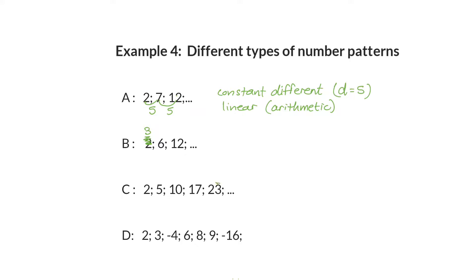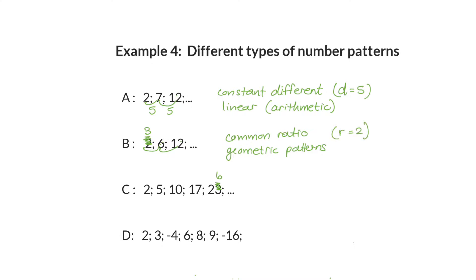The constant difference is five in this case. The second type has no constant difference — the difference is six here and three there — but it has a common ratio: it has been multiplied by the same number. Three times two is six, six times two is twelve. Or: twelve divided by six is two, and six divided by three is also two. Patterns with a common ratio are called geometric patterns, and you will be doing them next year. The ratio in this case is two.